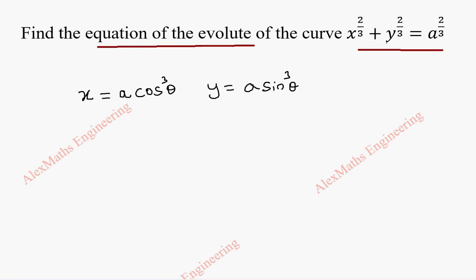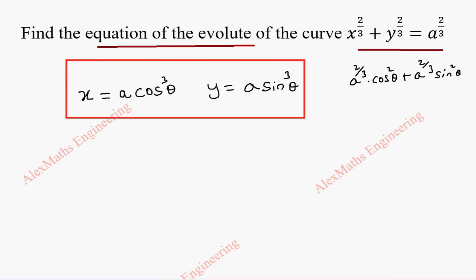Because when I substitute here, it will satisfy. When I substitute in place of x, A cos³θ here, this will become A^(2/3) into cos²θ. In the same way the second term will become A^(2/3) into sin²θ. After taking common A^(2/3), we get 1 on the other side. So this is our parametric form: x = A cos³θ and y = A sin³θ.